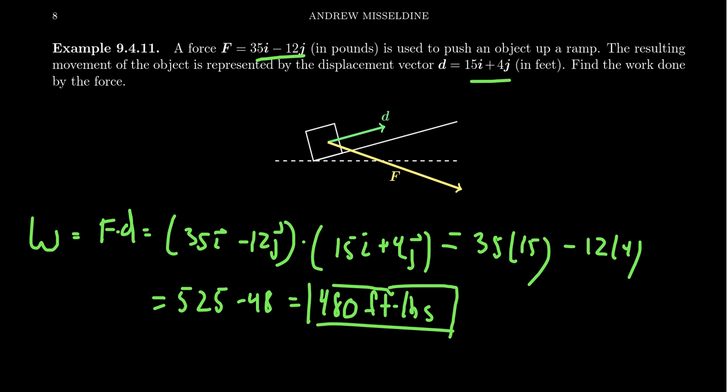This is a very important application of the dot product in physics. Computing work can be done by taking the dot product of the vectors, either in trigonometric form or algebraic form. Algebraic form is definitely easier but requires translation between trigonometric and algebraic. This brings us to the end of Lecture 31 and also the end of Chapter 9 about vectors.